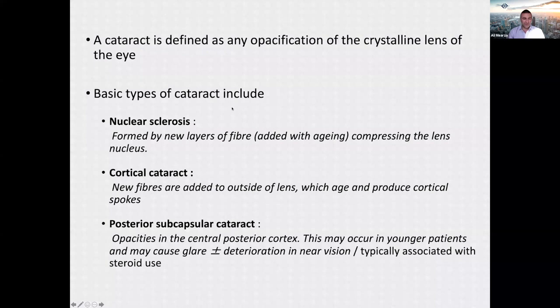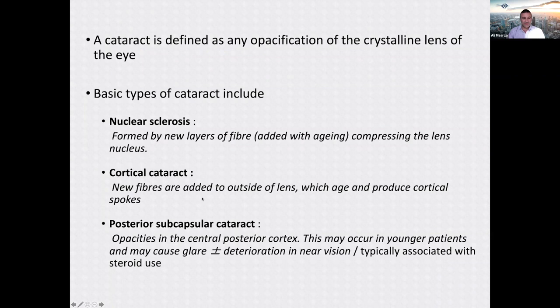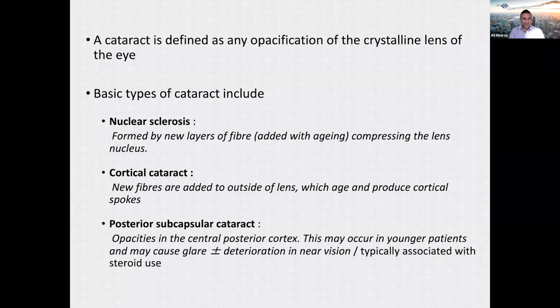Cataract is defined as any opacification of the crystalline lens. The basic types include nuclear sclerosis — probably the most common type — where new layers of fiber added by aging compress the lens nucleus and can induce index myopia. Cortical cataract involves fibers added to the outside of the lens, producing cortical spokes. Posterior subcapsular cataract involves opacities in the central posterior cortex, affecting younger patients, causing glare and near vision deterioration, and is typically associated with steroid use.